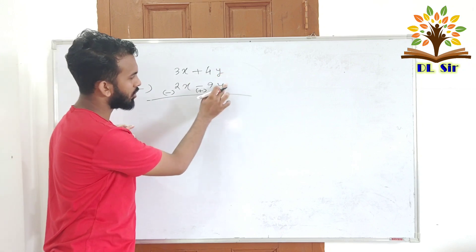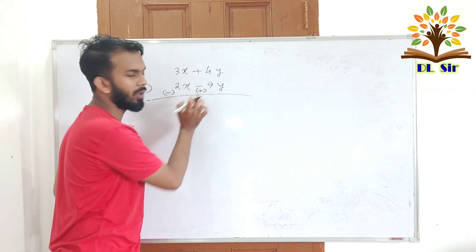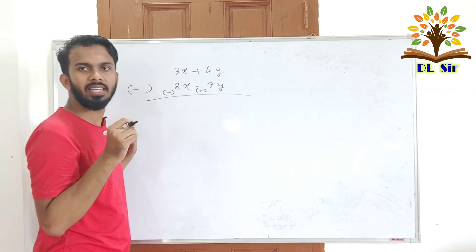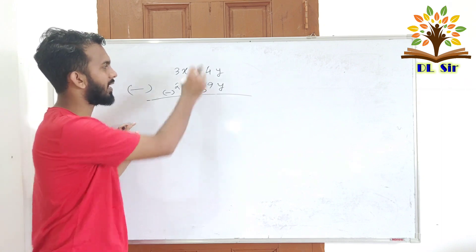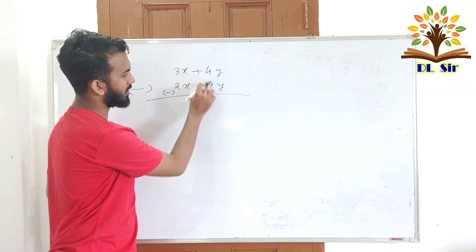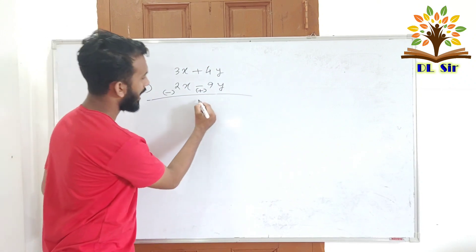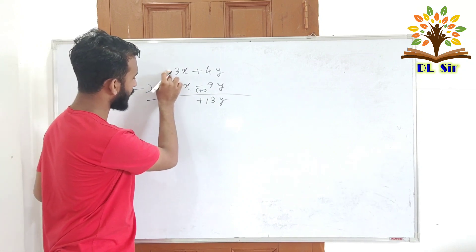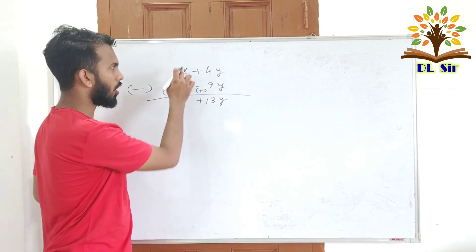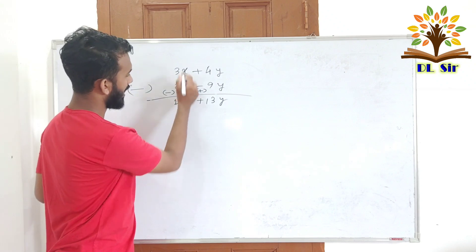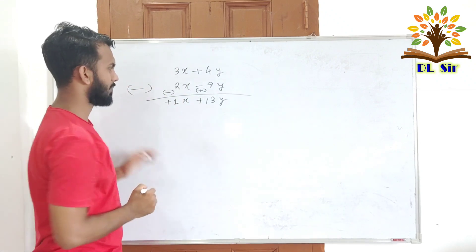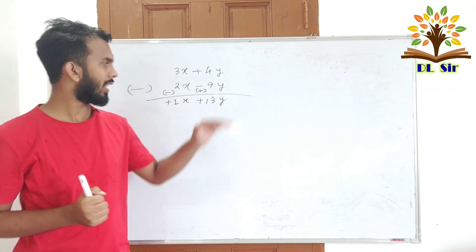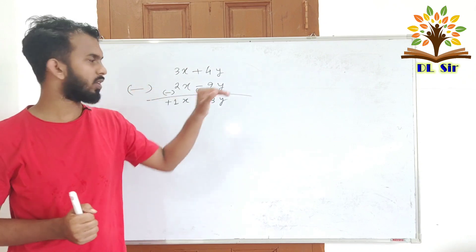When we subtract, the signs change. Plus plus gives plus, and plus minus gives minus. When we subtract two terms, the sign of the subtracted term flips. For example, this plus 4 and this plus, if we have two numbers that are both plus, we get plus. Plus plus minus means we look at the bigger number's sign, so the border sign is minus.